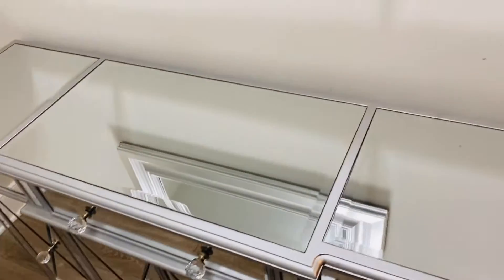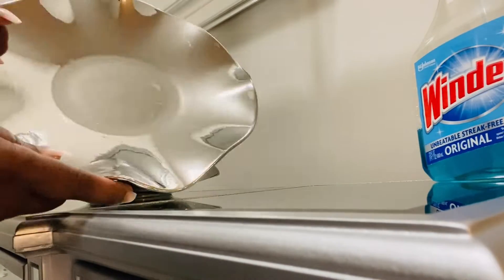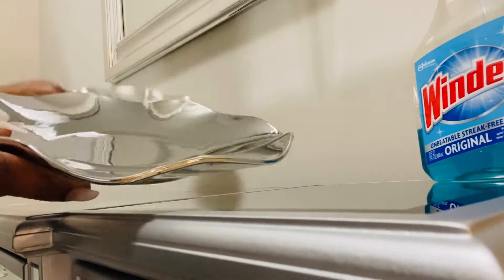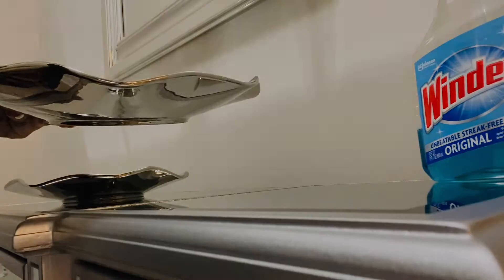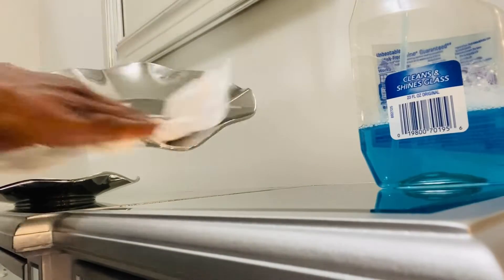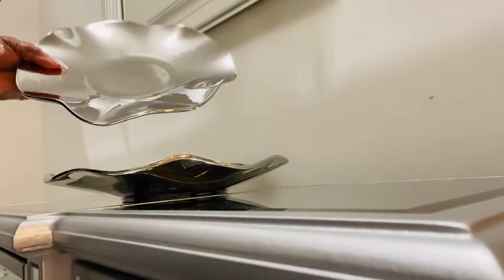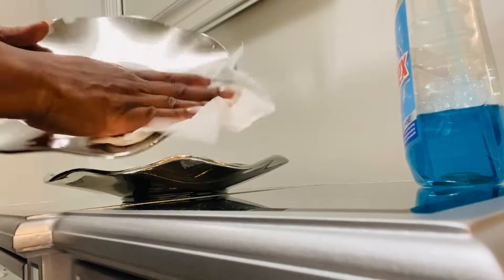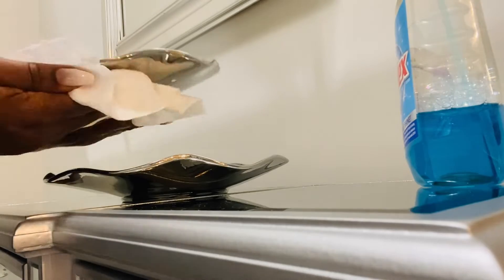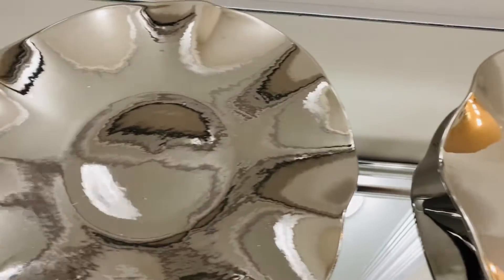Alright my lovelies, so now that we got that all shined up and looking all glamorous, we are going to go ahead and add two little pieces that I bought from HomeGoods. Now these are so cute, I got them off the clearance rack and they were $9 a piece. They were originally I think $12.99, but I got them for $9 and they are so beautiful guys. So I'm going to go ahead and shine them up and what I'm going to do is I'm going to place one on each side of the console.